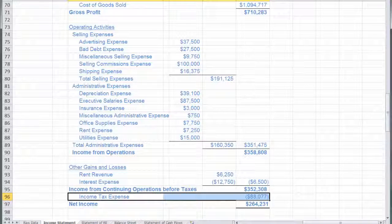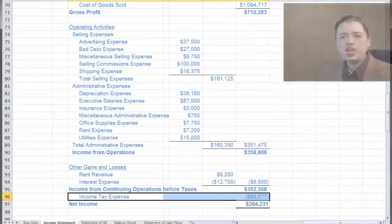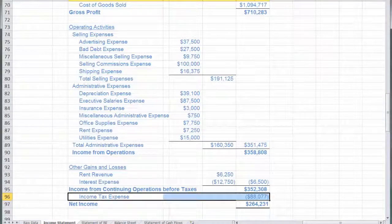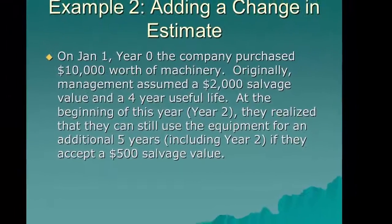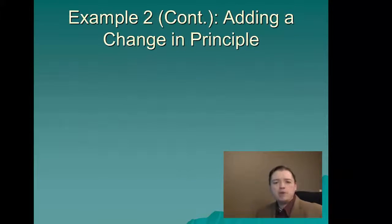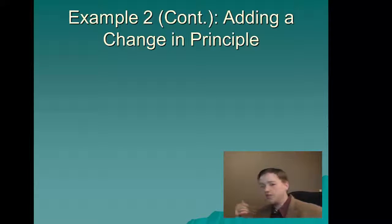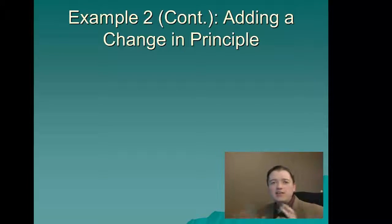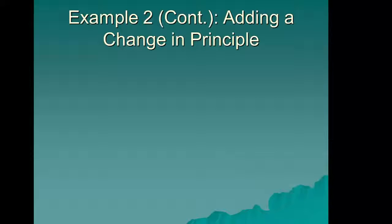That wraps up the first change — a change in estimate. The important idea is that when we change an estimate, we just move forward with the new numbers. Now let's take a look at the next kind of special item: a change in principle. A change in principle really means we've changed methods — for example, we were doing LIFO for inventory and switched to FIFO, or straight-line depreciation and switched to double-declining balance, or percent of sales for bad debt and switched to percent of accounts receivable. It could be any of these different changes.